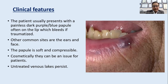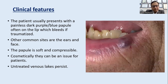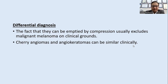Diascopy reveals characteristic bluish vascular spaces — compared to the red vascular spaces seen in cherry angiomas. Histopathology shows several dilated venous channels consisting of a single layer of flattened endothelial cells with a thick wall of fibrous tissue surrounding them. Patients present with a painless dark purple or blue papule on the lip that will bleed if traumatized. Papules are soft and compressible; the fact that they can be emptied by compression usually excludes melanoma.